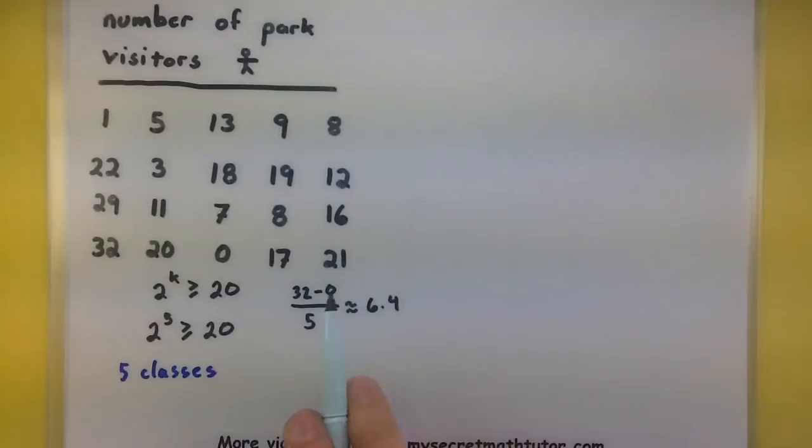Now when looking for the width, it's a good idea to round this up to the nearest whole integer. If you round it down, sometimes you won't get the required number of classes that you need. You'll end up with a few extra classes.